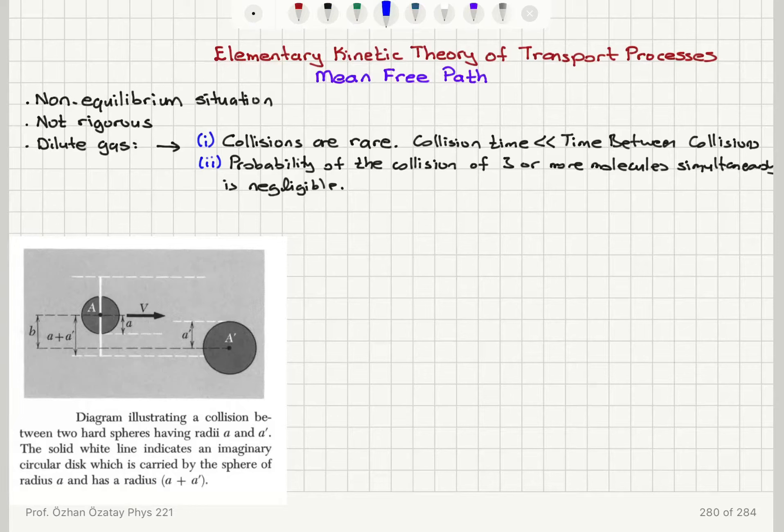And the distance between the molecules, the average distance between the molecules delta x, this is much greater than the de Broglie wavelength. So we're talking about a classical gas here. The collisions themselves may require a quantum mechanical description. Quantum mechanics may play a role during collisions. So we're basically saying it's an ideal gas.